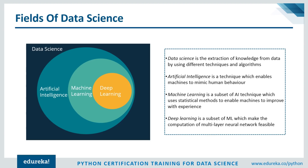Machine learning is a subfield of artificial intelligence which provides machines the ability to learn automatically and improve from experiences without being explicitly programmed or any human intervention. Deep learning is a part of machine learning that uses computational measures and algorithms inspired by the structure and function of the brain, called artificial neural networks. To conclude, data science involves the extraction of knowledge from data, and uses methods from machine learning, artificial intelligence, and deep learning. Data science is a wider field and does not exclusively rely on these techniques — there's a lot more to each of these disciplines.